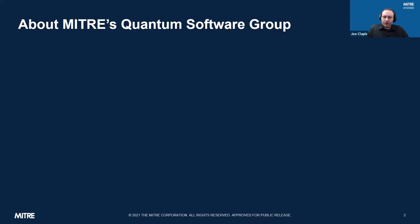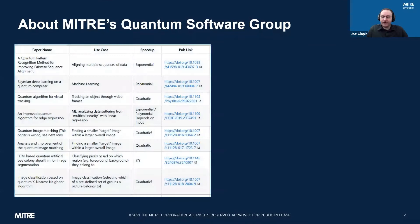Our work tends to revolve around three key activities. First, we collect novel quantum algorithms from peer-reviewed sources — journals and conferences — that look like they may be applicable to our interests. What you see here is a sample from our repository. We capture what a particular paper represents, what its use cases are for the algorithm contained inside, what the potential speed-up could be versus classical computation, and then we provide links for it.